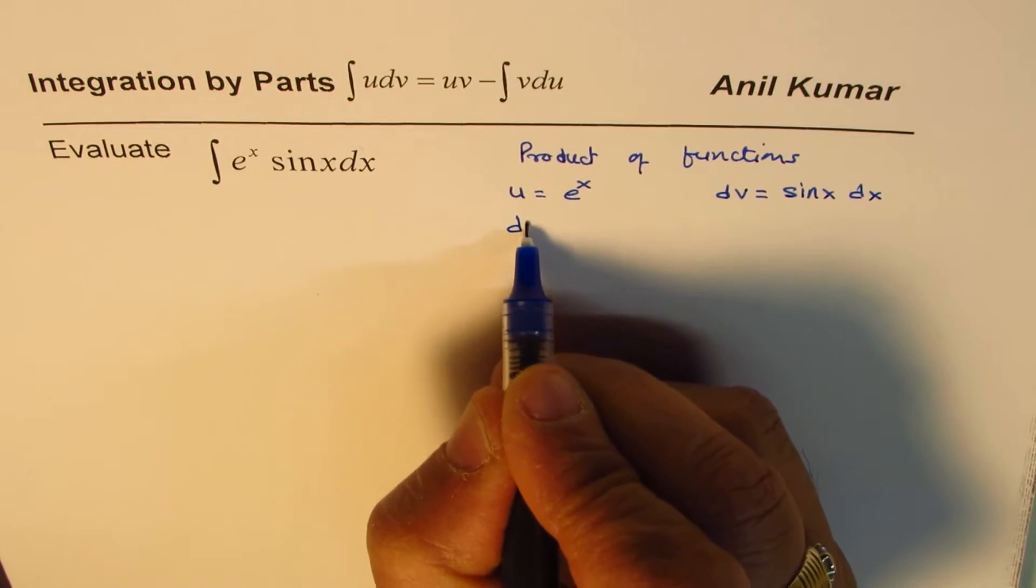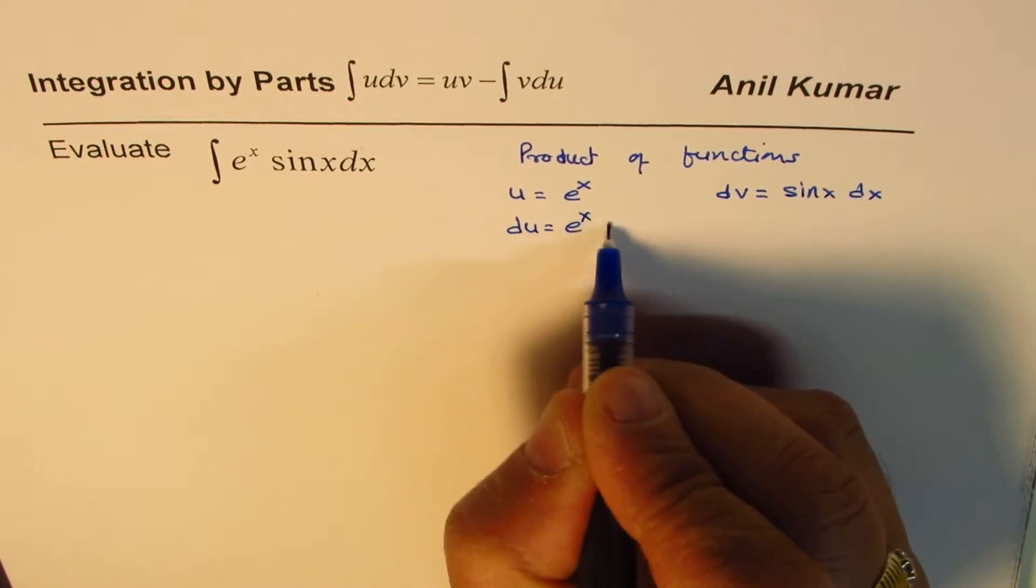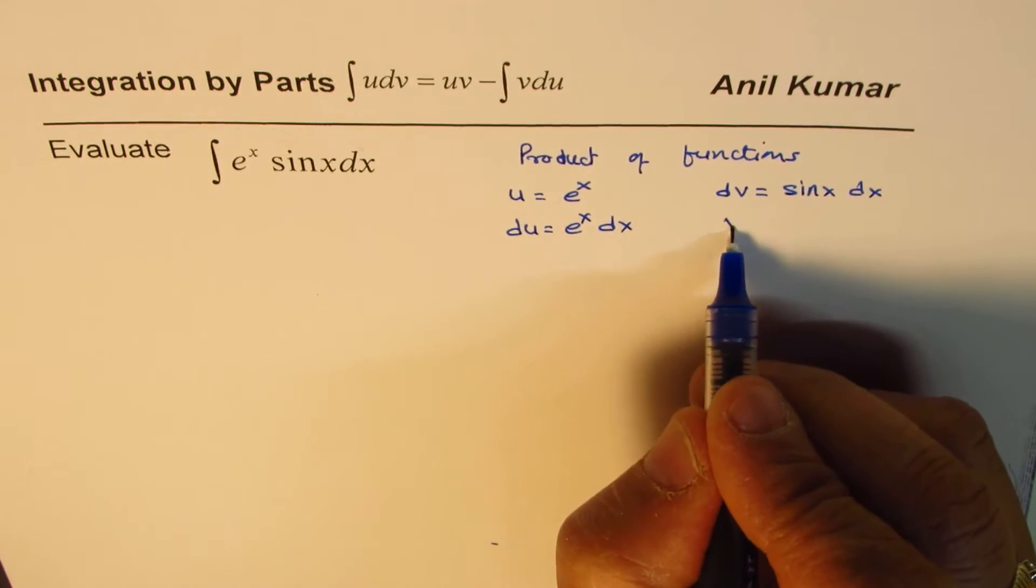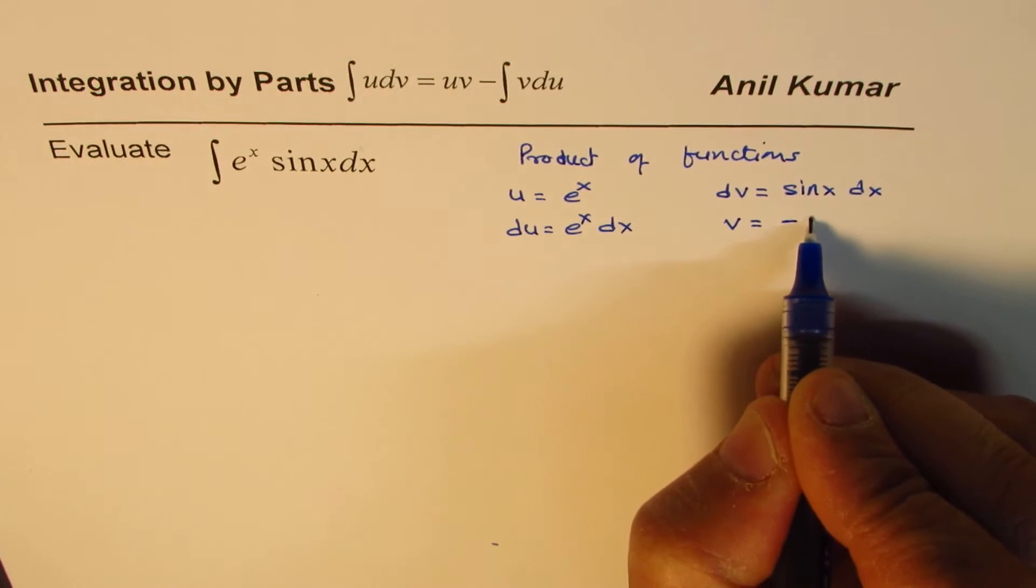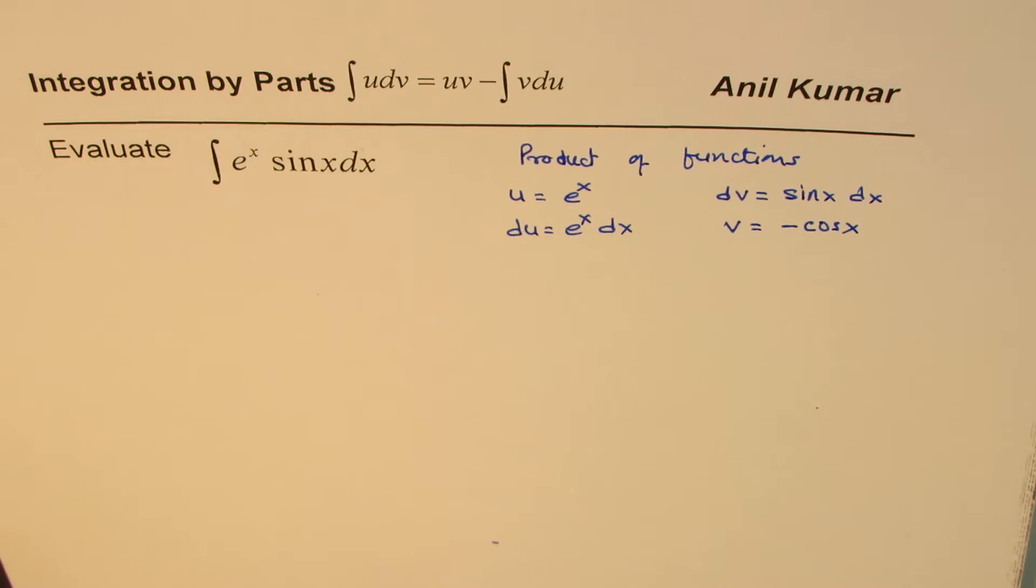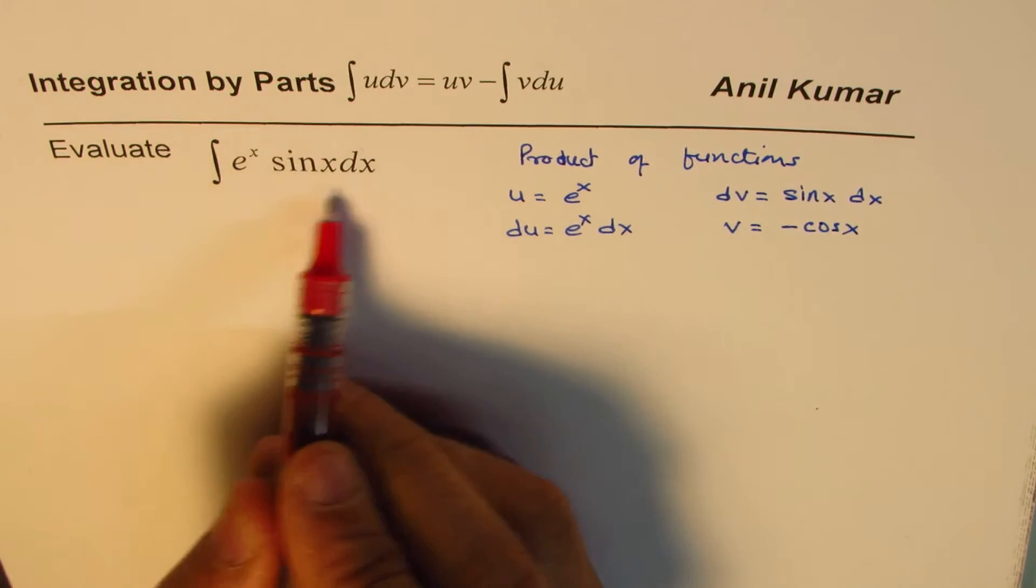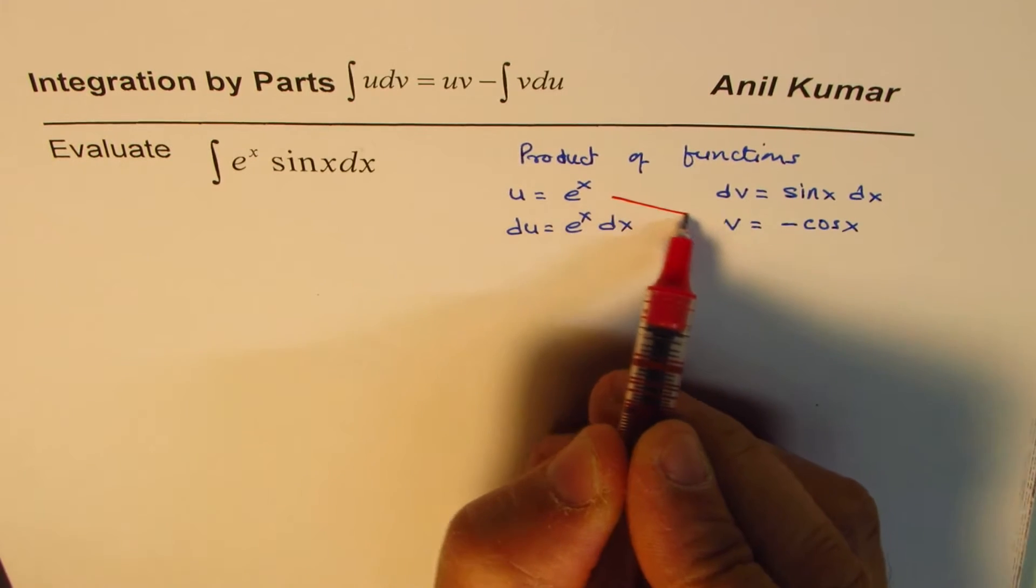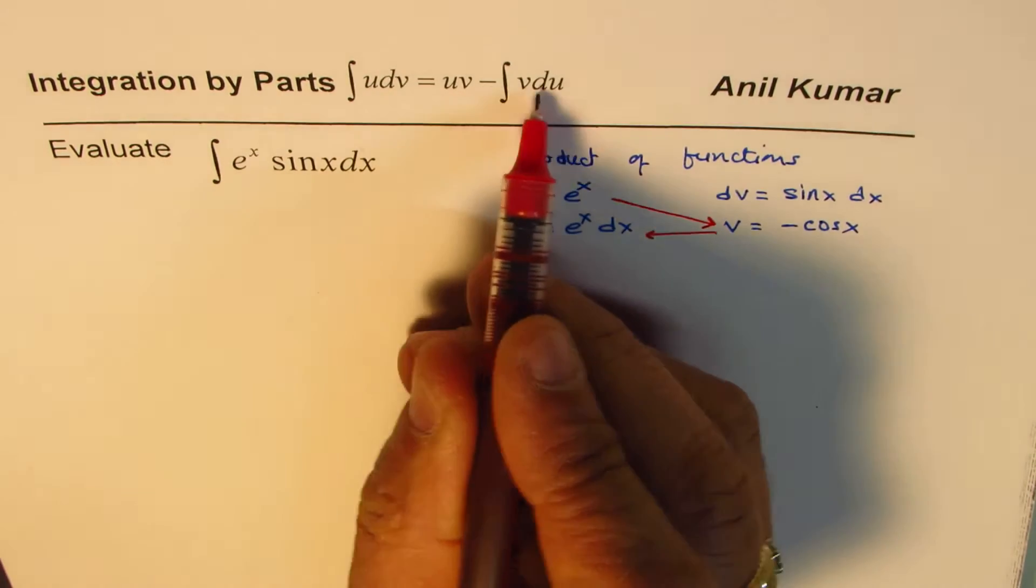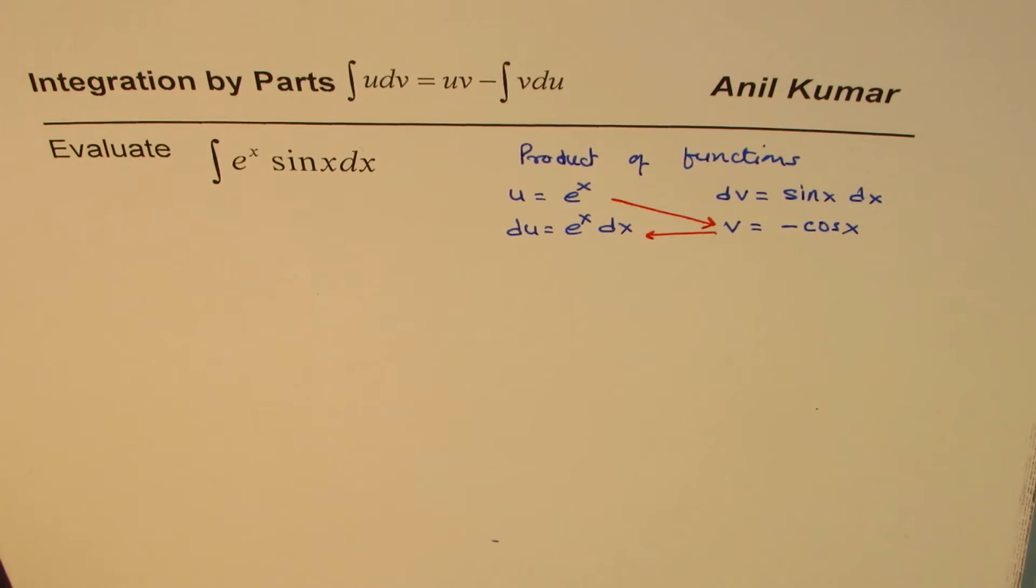Now, the derivative of this is du equals e to the power of x dx, and the integral of this is v, and that is minus cos x. So we could apply integration by parts to find this integral. We need to multiply this and take away integral of that product.